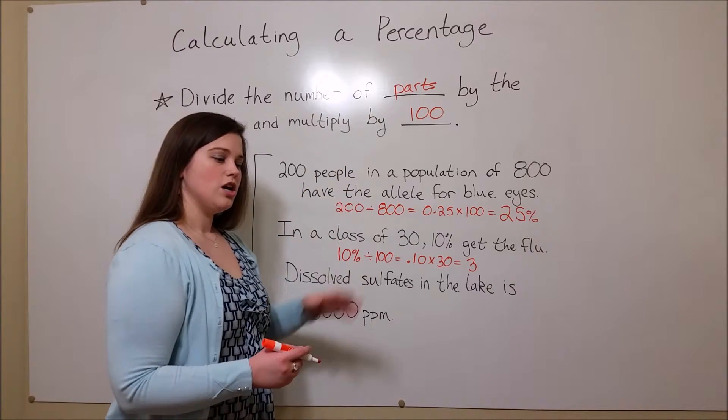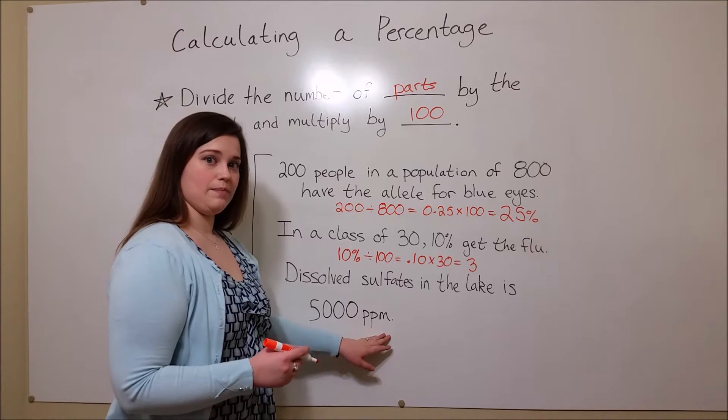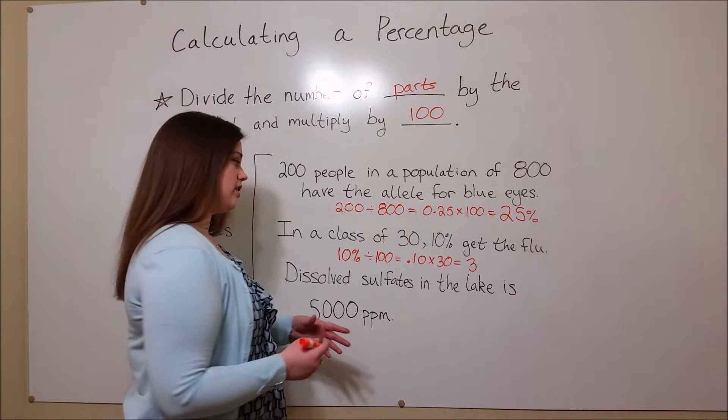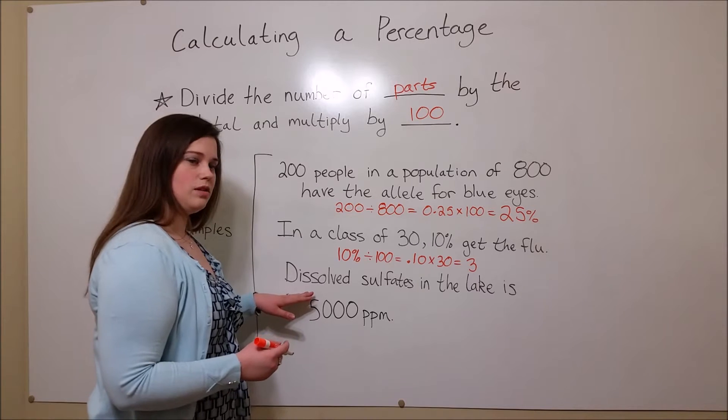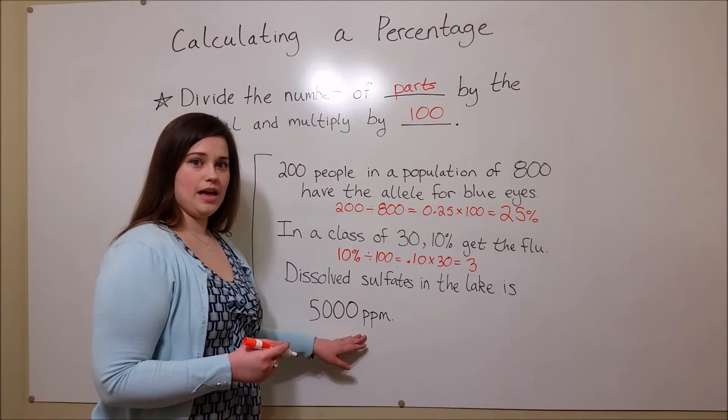You can also use your understanding of how to calculate a percentage to do some more difficult problems involving something like PPM. PPM is parts per million, so it's a unit of concentration. So for example, if you're told that the level of dissolved sulfates in a polluted lake is 5,000 PPM, what percent is this?